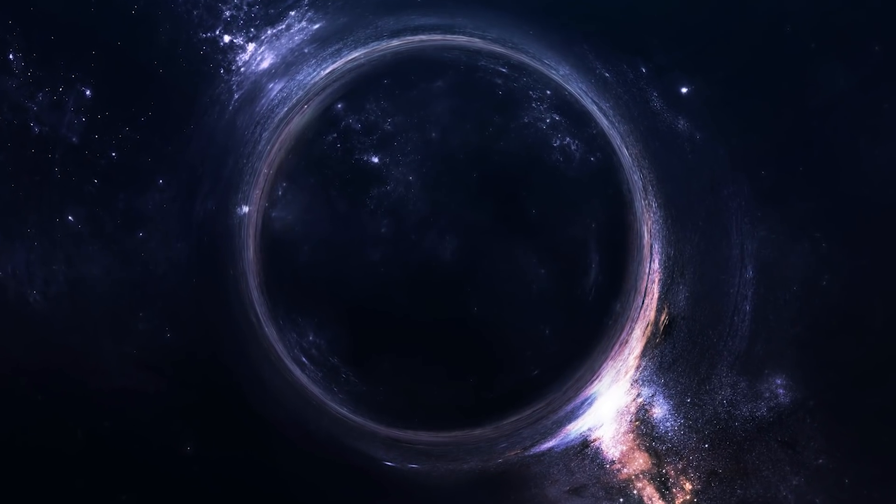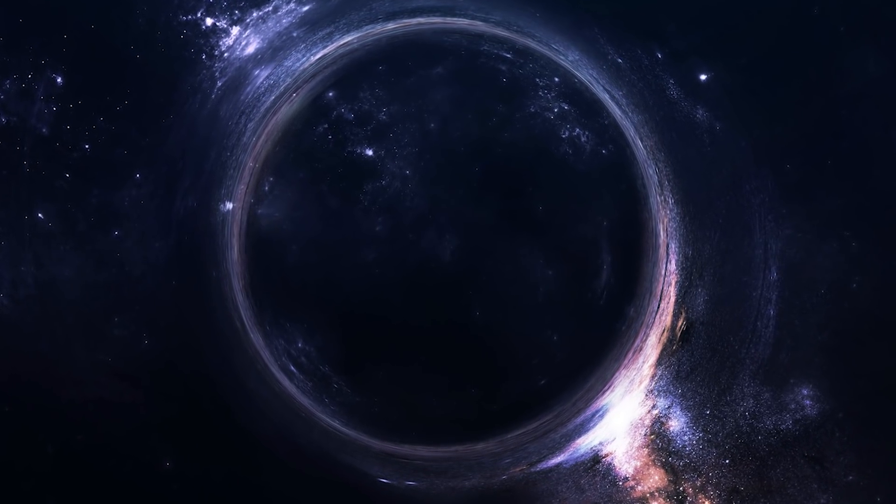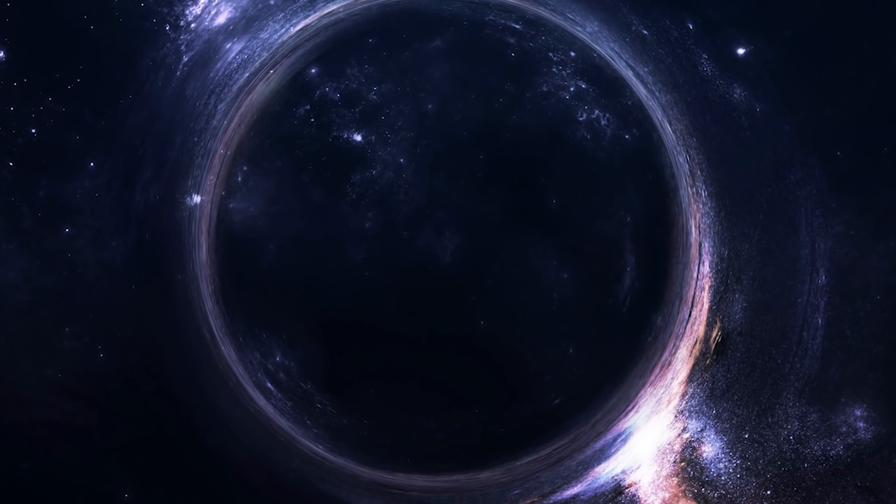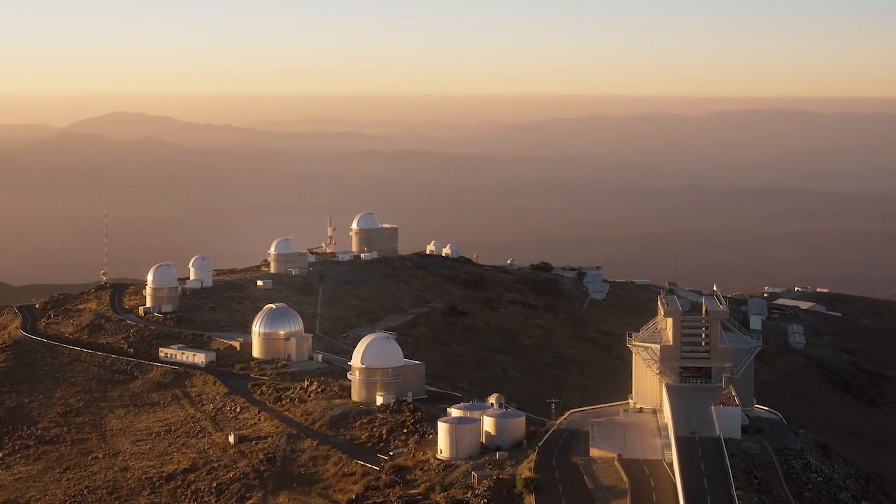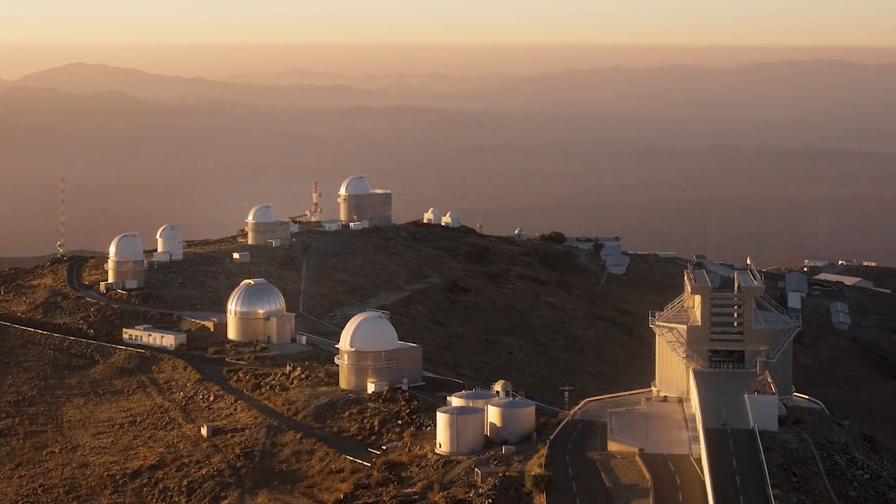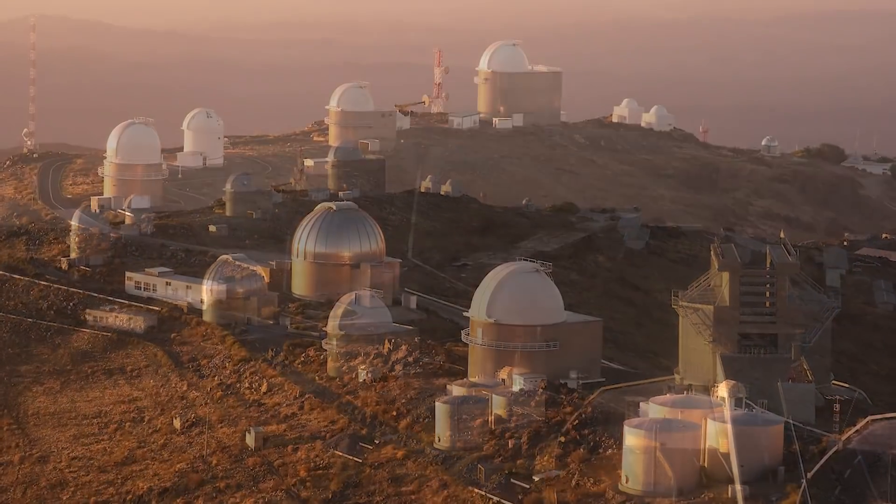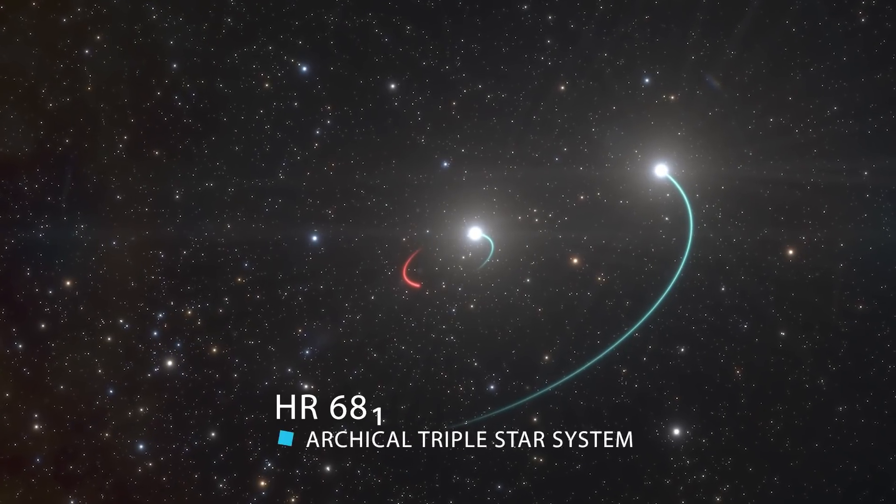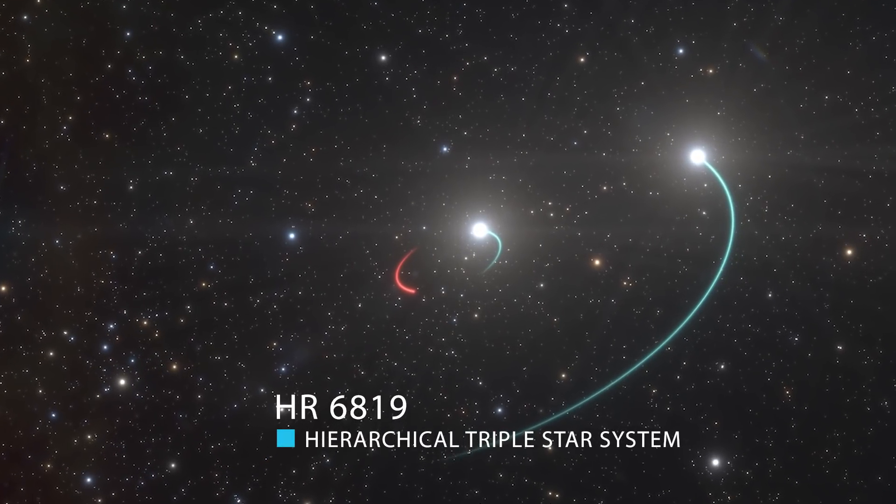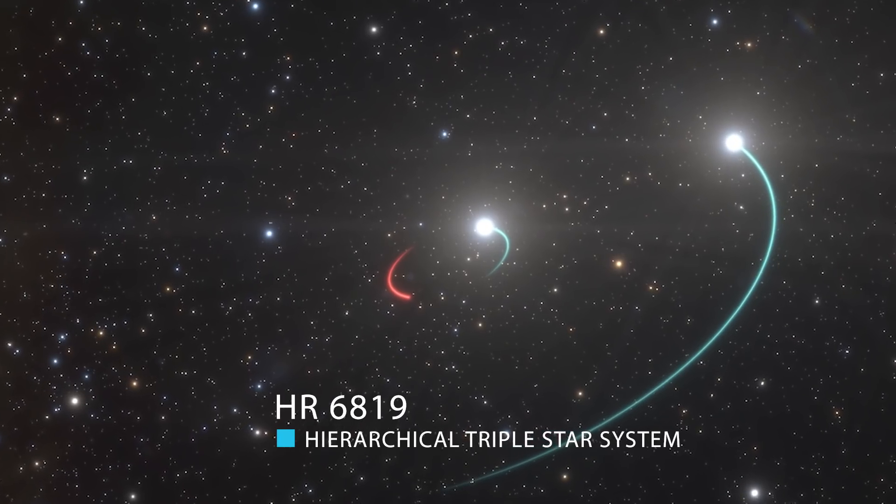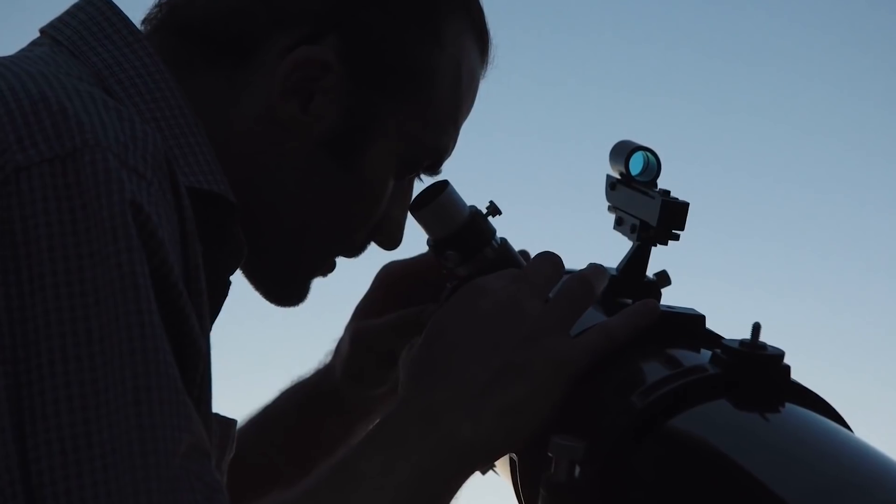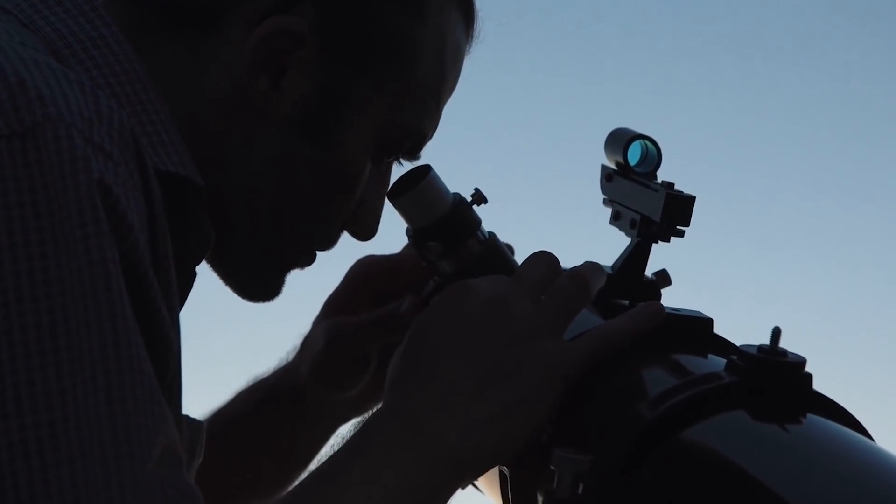Astronomers discovered this black hole while studying what they thought was just a binary star system, or two stars that orbit a common center of mass. They were using the MPG ESO 2.2-meter telescope at the La Silla Observatory in Chile to observe the binary known as HR 6819, as part of a broader study on double star systems. When they analyzed their observations, the researchers were shocked to learn that a third object was hiding in the system, a black hole.